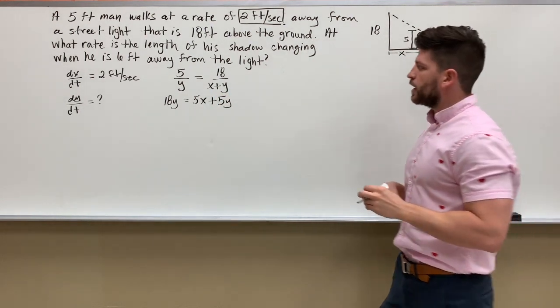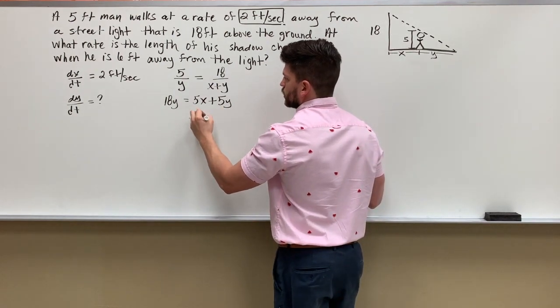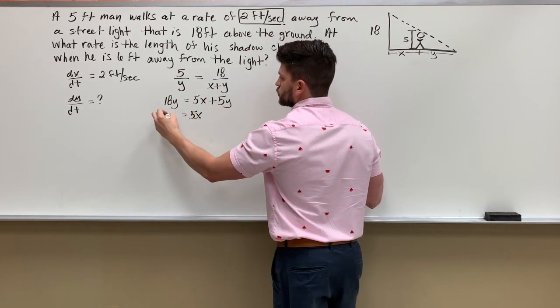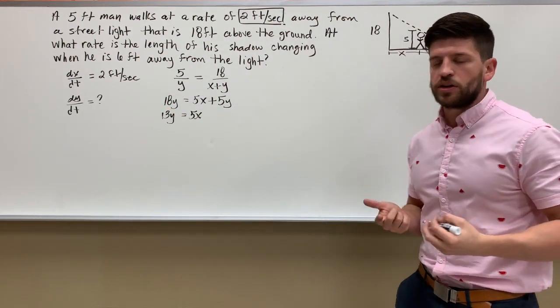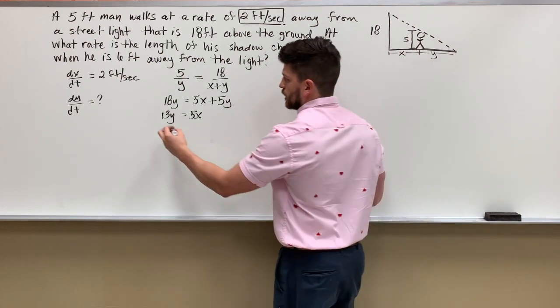I'm going to bring that 5y to the other side by subtracting, so I'm going to end up with 5x equals 13y. This is going to be my equation.